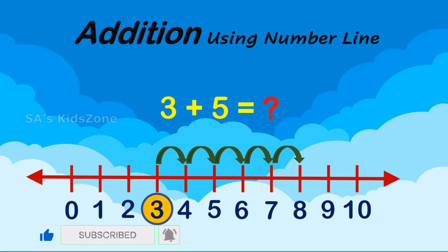Now, tell me, which number do we get after jumping? Yes, it's number 8, the answer. Therefore, 3 plus 5 is equal to 8.